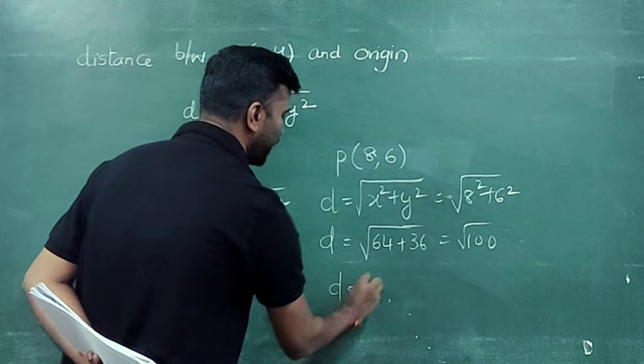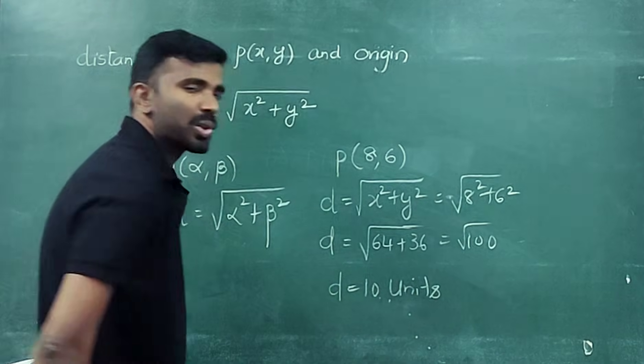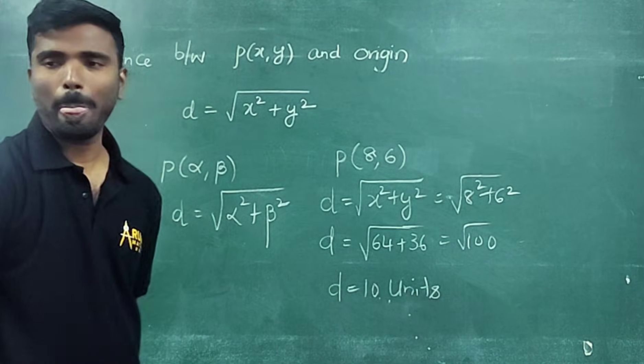This is equal to square root of 100. Square root of 100 will be? d equals 10 units. Very simple questions to score. How many marks? 1 mark.